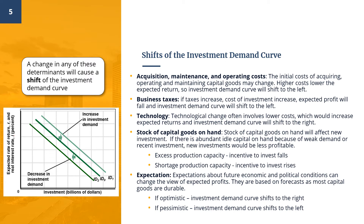These other determinants of investment spending are as follows. First, acquisition, maintenance, and operating costs: the initial costs of acquiring, operating, and maintaining capital goods affect the expected rate of return on investment. Higher costs lower the expected return, so the investment demand curve will shift to the left, and vice versa. Second, business taxes: if taxes increase, the cost of investment increases, causing expected profit to fall and the investment demand curve to shift to the left.